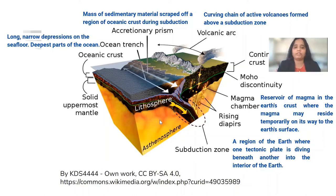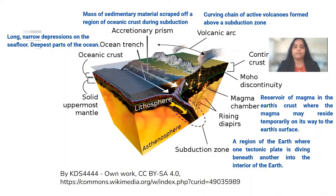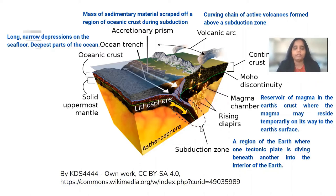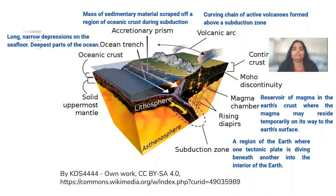What exactly happens to give rise to a volcano? So this is a tectonic plate boundary. This is the oceanic plate and this is the continental plate. When the oceanic plate and the continental plate collide, the oceanic plate, being heavier and thinner, goes inside — it is subducted, and a subduction zone is formed. The subduction zone is a region of the earth where one tectonic plate is diving beneath another tectonic plate.